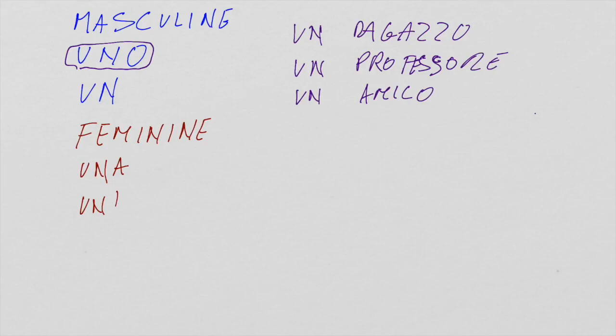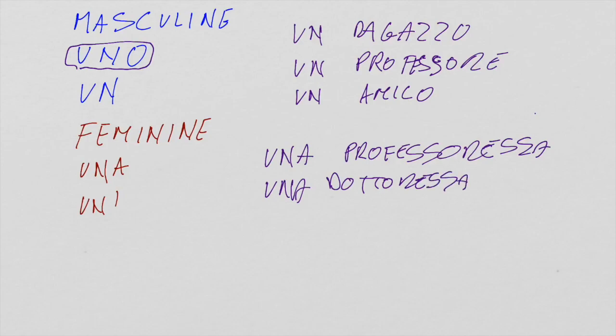Now, let's see how to work with the feminine one. We use UNA in front of all feminine nouns starting with consonant. It's easy. All feminine nouns starting with consonant. So, for example, a female professor would be una professoressa, a female doctor would be una dottoressa, and so on.